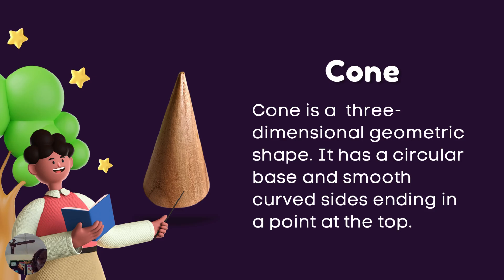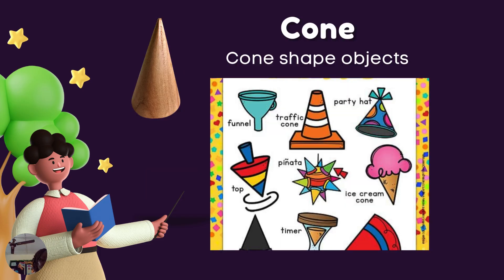Another example of a three-dimensional shape is a cone. A cone is a three-dimensional shape. It has a circular base and smooth curved sides ending in a point at the top. Examples of cone-shaped objects include funnels, traffic cones, party hats, ice cream cones, and timers.